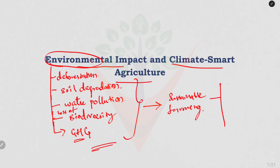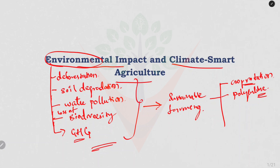Crop rotation means alternating different crops in the same field across seasons, which prevents soil nutrient depletion and reduces pest and disease cycles. Polyculture means growing multiple crops together, which enhances biodiversity and resilience.